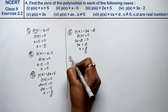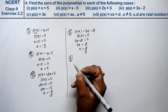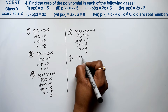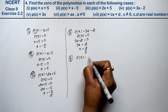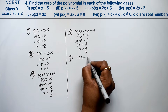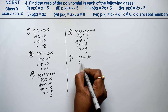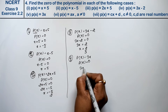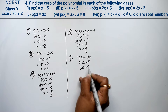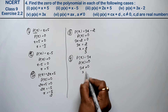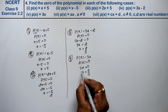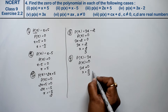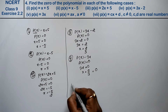यह same case है जैसे हम linear equation में करते थे. Let's do fifth part. p(x) equals to 3x. तो p(x) की value equals to 0 रखेंगे, that means 3x equals to 0. तो x की value कितनी आगई? 0 upon 3 — क्योंकि यह multiplier में था, इधर आके divide का हो गया. Answer is 0.